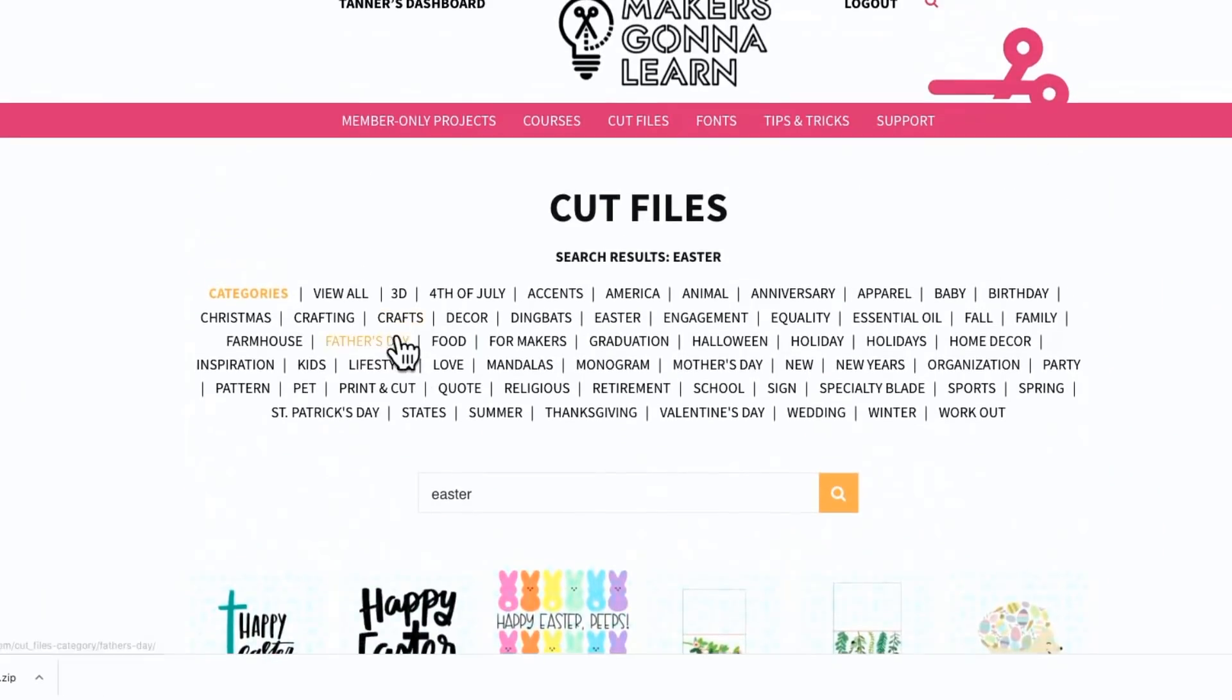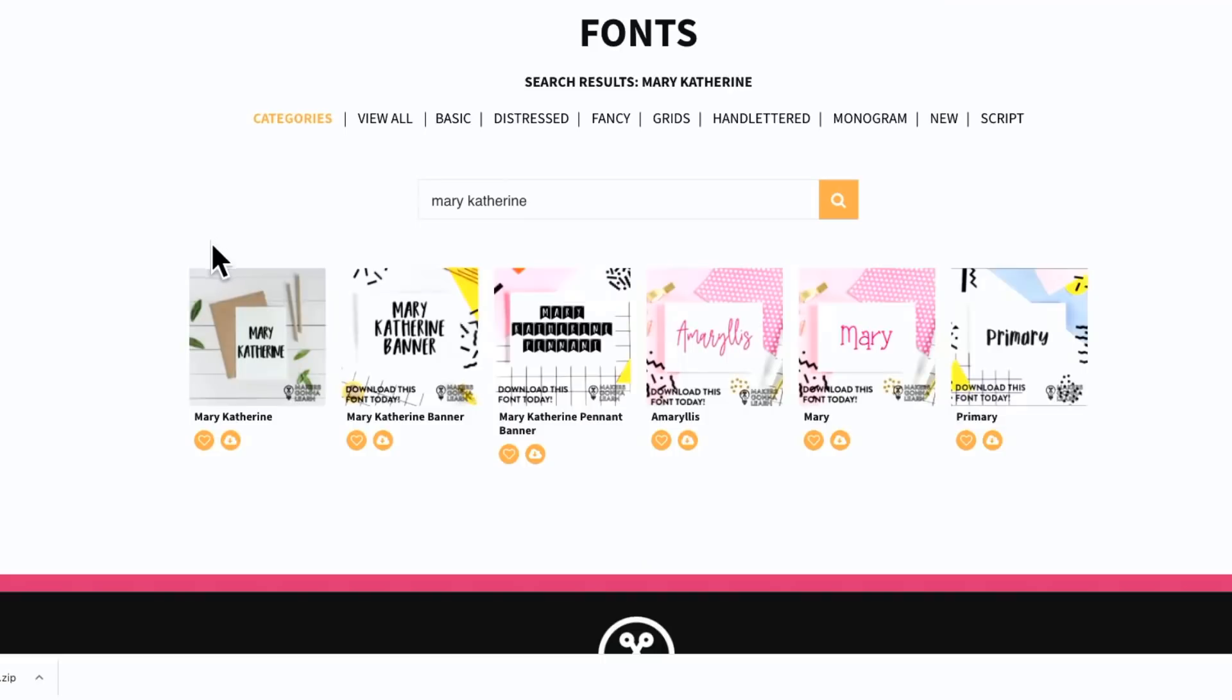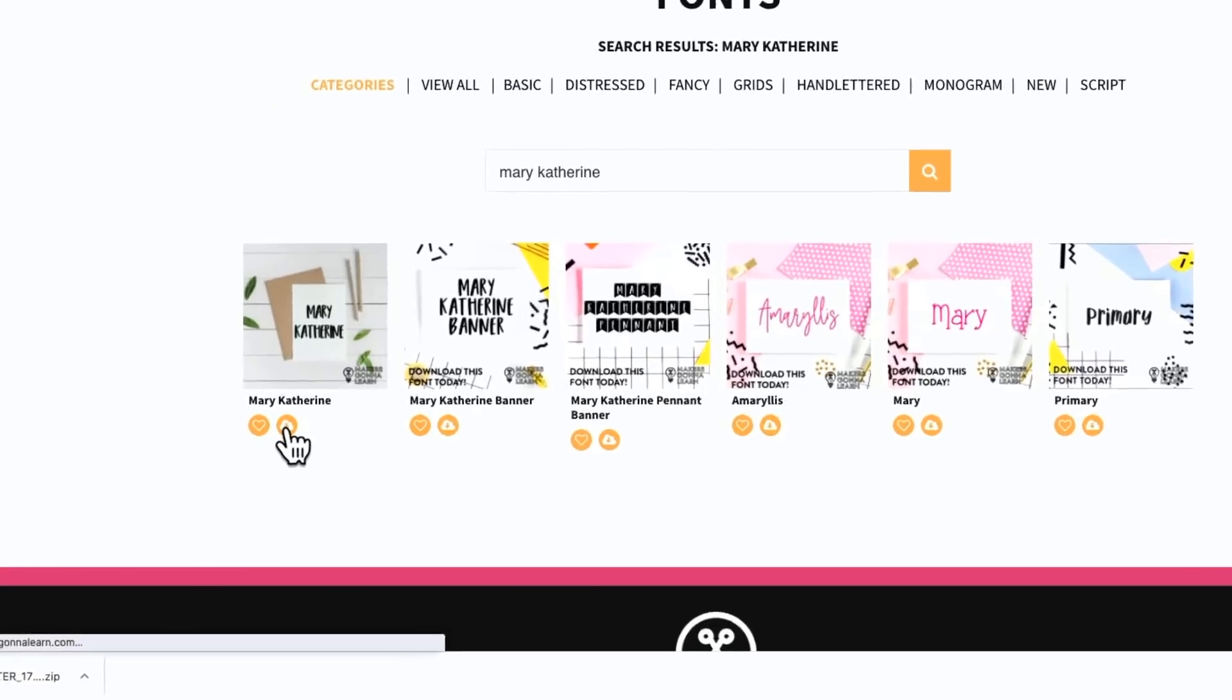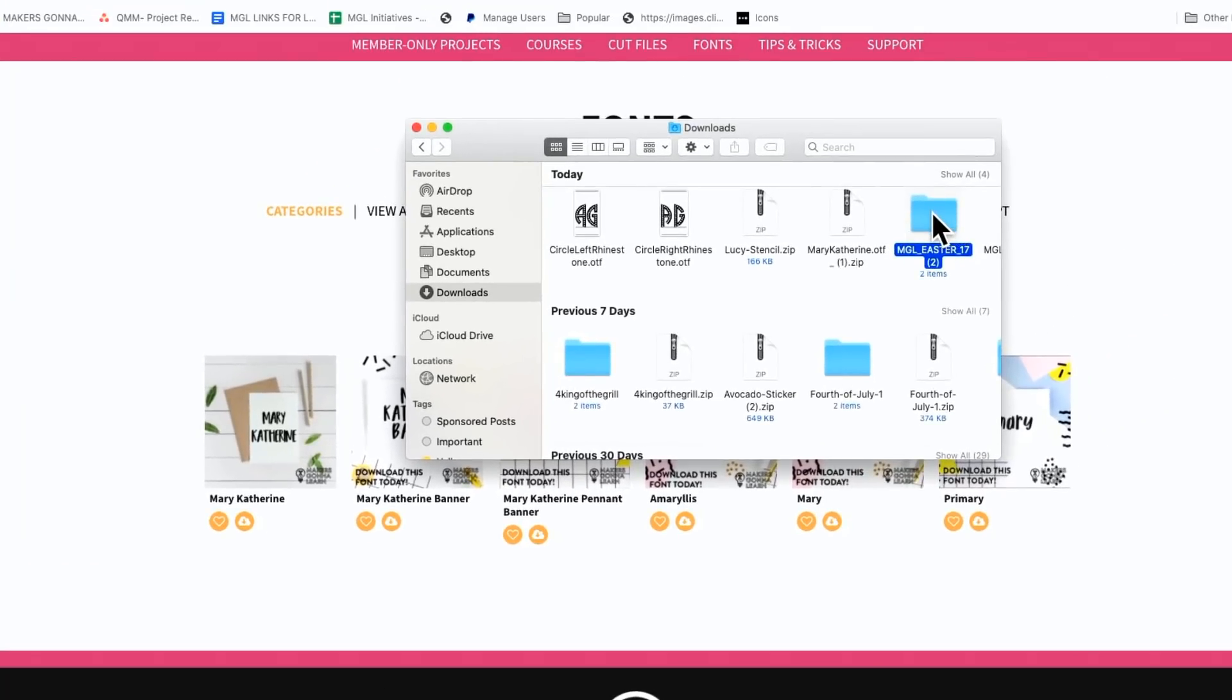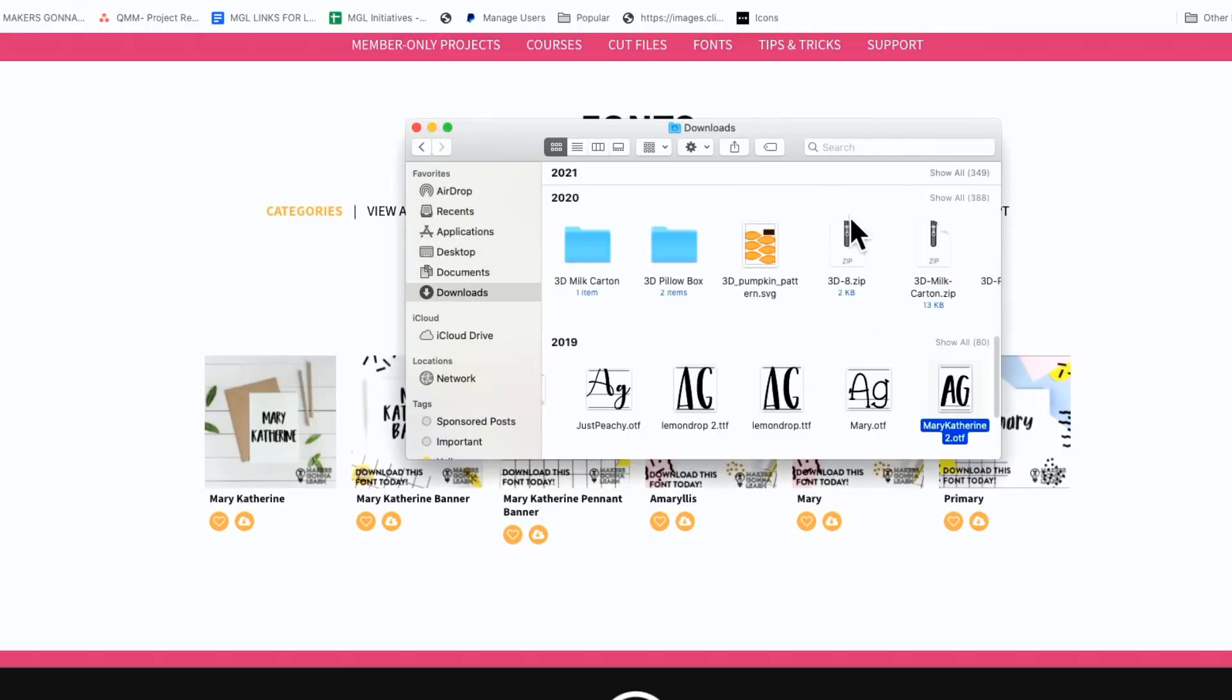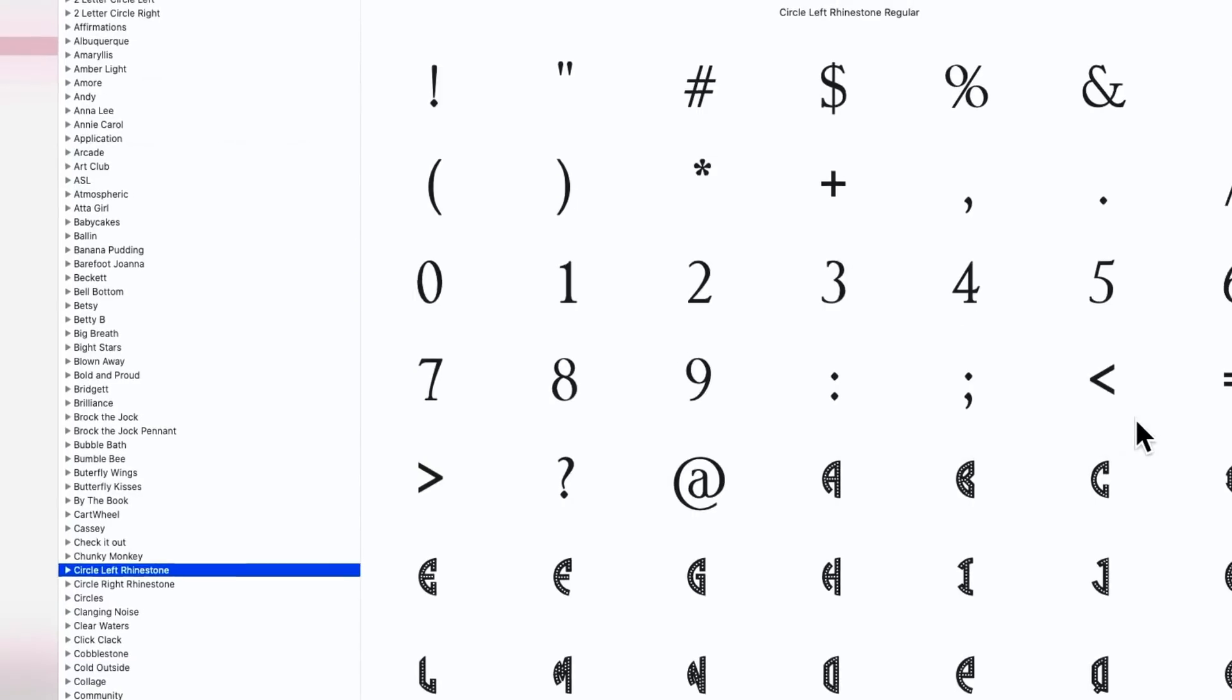And then I'm also going to download a font and we're going to be using Mary Catherine font. We have thousands of fonts for you to choose from. So we're going to be using this Mary Catherine font right here. Go ahead and download that. If it's a zipped file, which this font is, we're going to go ahead and click that to unzip it. And then we're going to click again and make sure that we install the font.